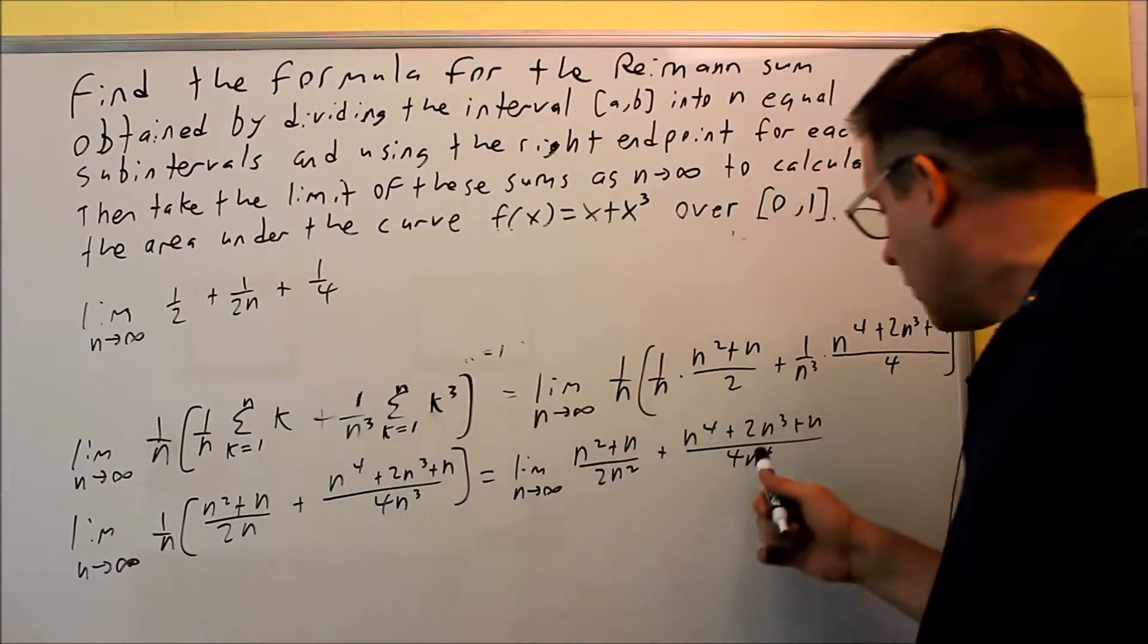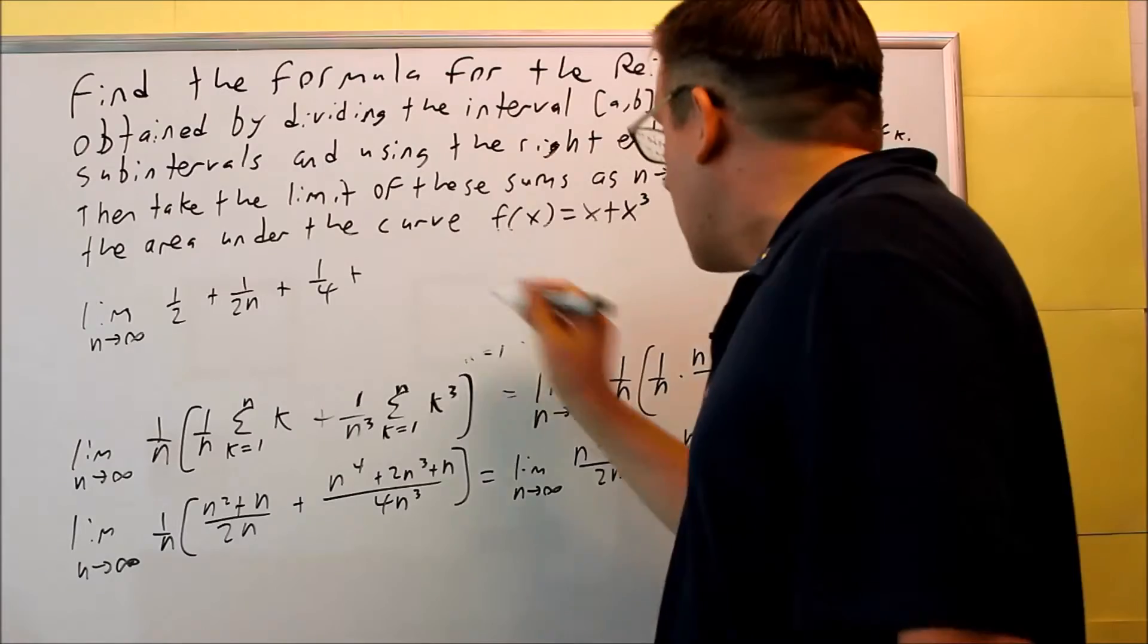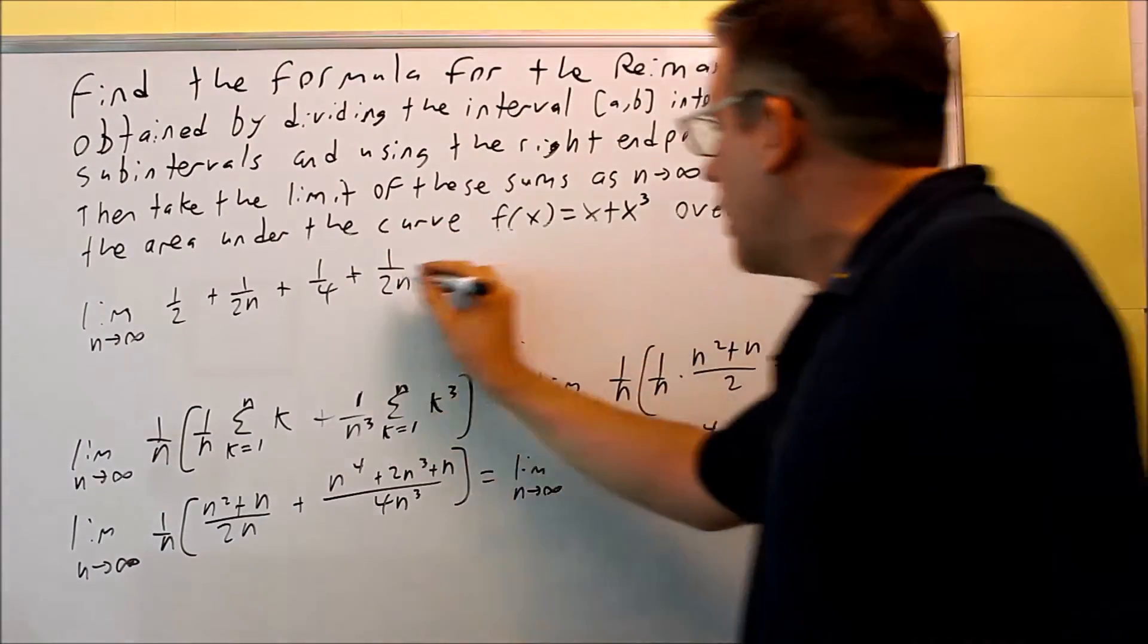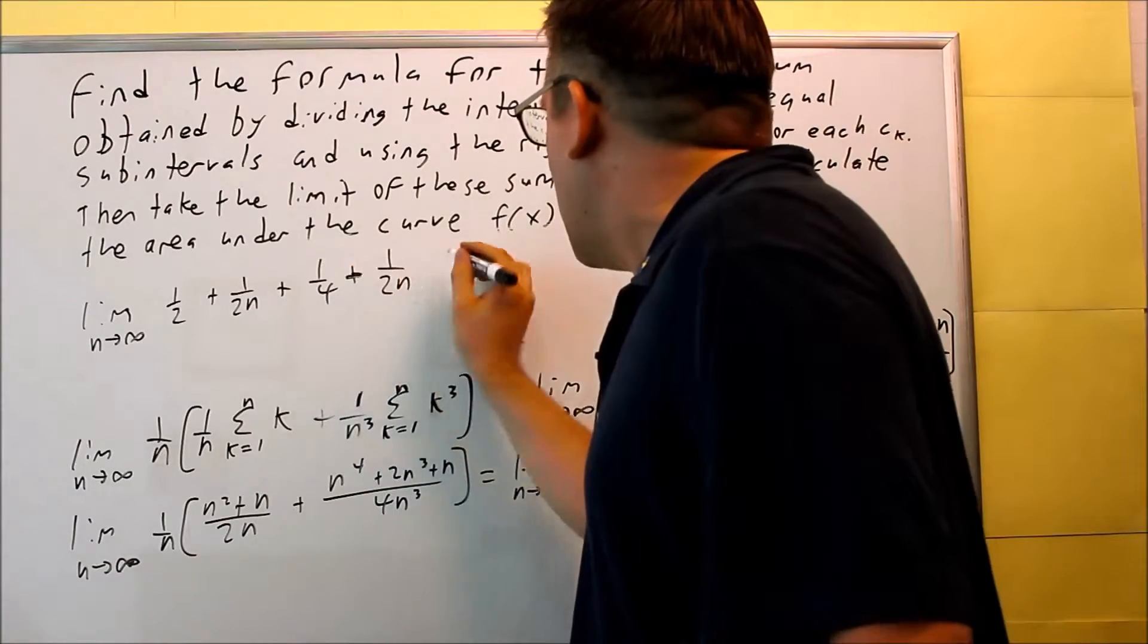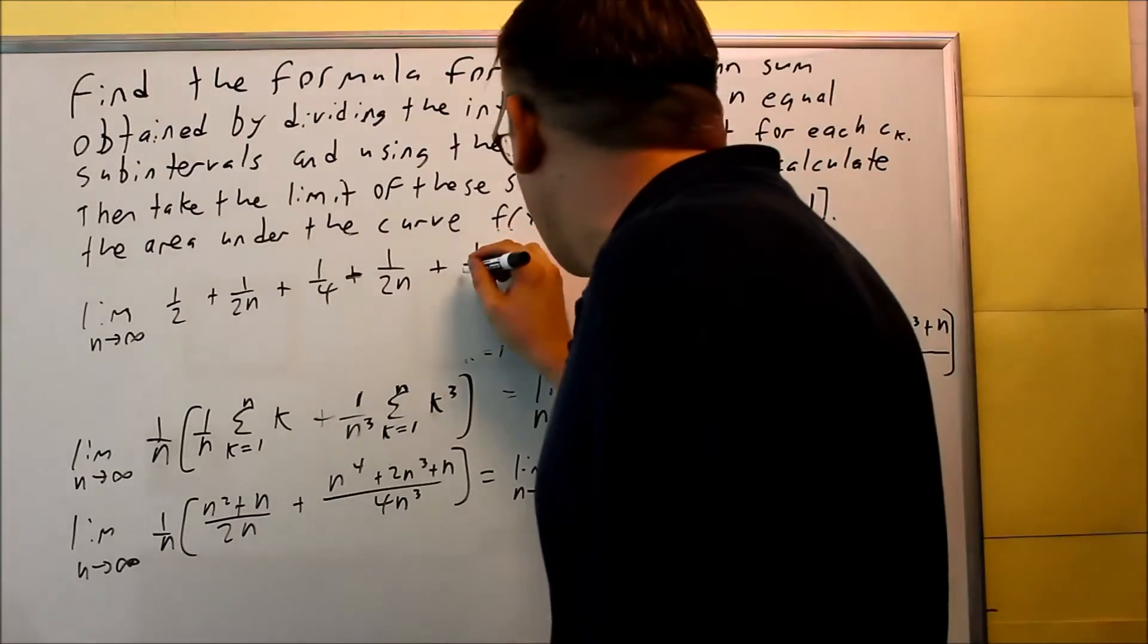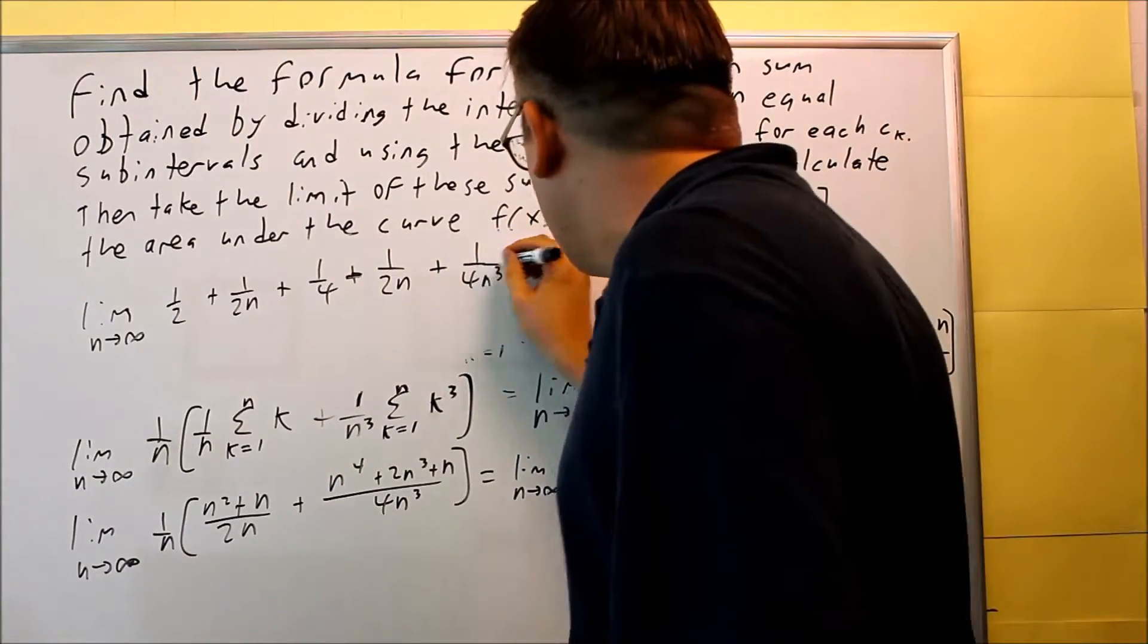Next, I have 1 over 2n again. And then the next part I have, the last part on the end, is going to be n over 4n to the fourth. It's going to be 1 over 4n to the third.